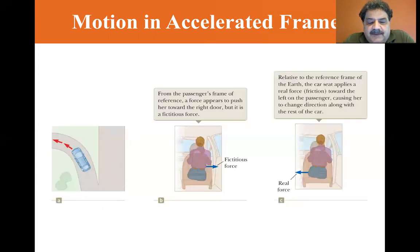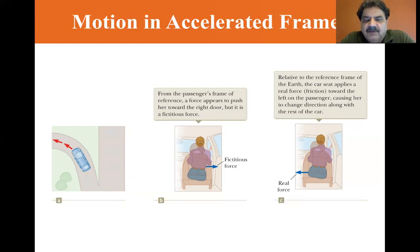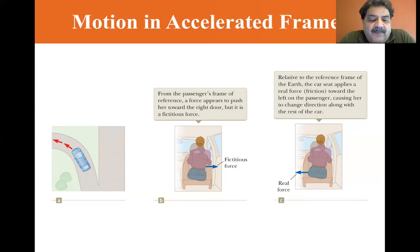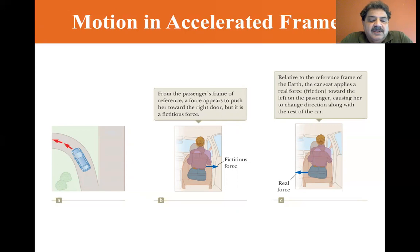Fictitious forces can also be due to a change in the direction of a velocity vector. Imagine a car traveling along a highway at high speed and approaching a curved exit ramp. As the car takes the left turn, the person sitting in the passenger's seat leans or slides to the right and hits the door.